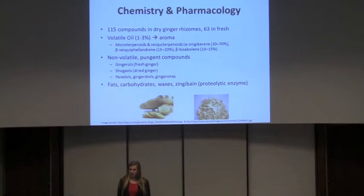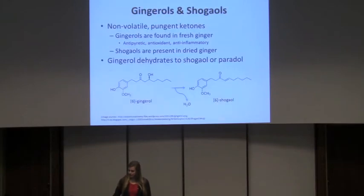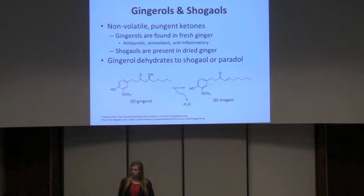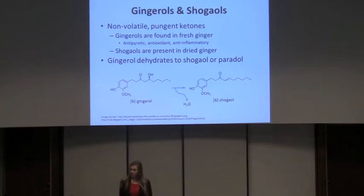The volatile oil, found in both fresh and dry rhizomes, is composed of monoterpenoids and sesquiterpenoids. The non-volatile pungent compounds responsible for taste include gingerols, shogaols, paradols, gingerdiones, and gingerones, as well as fats, carbohydrates, waxes, and the proteolytic enzyme zingibain. Gingerols and shogaols are the most studied: they are non-volatile pungent ketones, with 6-gingerol dehydrating into 6-shogaol — gingerol predominating in fresh ginger and shogaols also present in dried ginger.